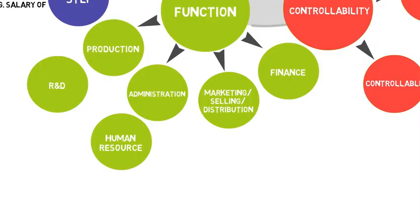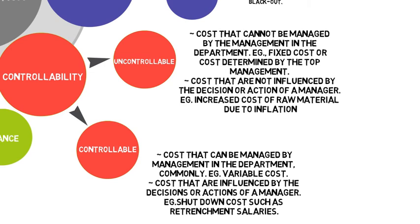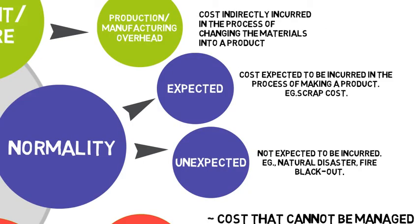Eight categories in cost function: production, administration, marketing, finance, R&D, human resource, product and period cost. Controllable and uncontrollable are in controllability classification. Normality divided into two, expected and unexpected.